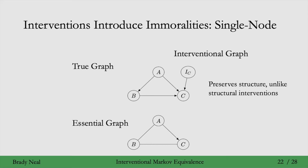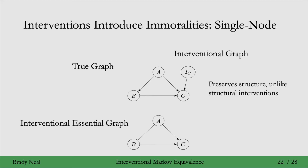Because we can detect immoralities in data, similarly we have an immorality now between B, C, and I_C — that immorality right here — and that allows us to direct this edge from B to C. So this graph where we've intervened on I_C has a corresponding interventional essential graph with respect to the intervention I_C. Then if we add another single-node intervention on B, we can identify the causal graph by directing this final edge from A to B using that immorality.